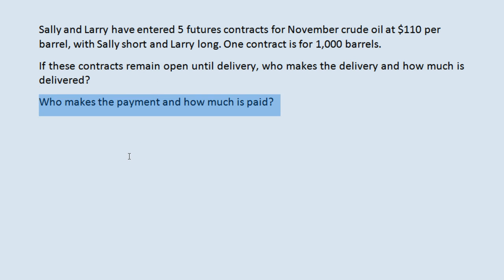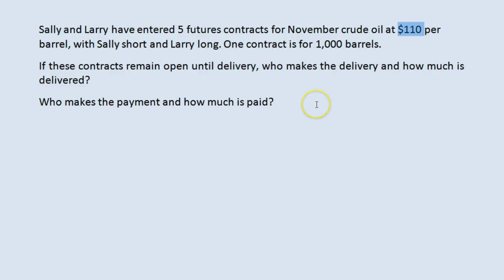The second question: who makes the payment and how much is paid? That's the other person in the contract. Larry is long this contract — he is obligated to buy, so he is going to make the payment. How much is paid? The agreed upon price, $110 per barrel, times five contracts, times 1,000 barrels — that's 5,000 barrels total. So the total amount paid would be 5,000 times $110, which is $550,000.